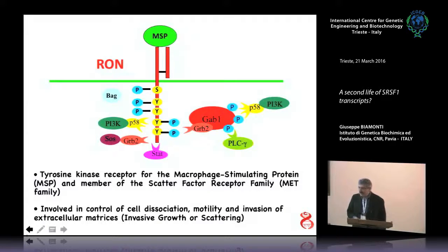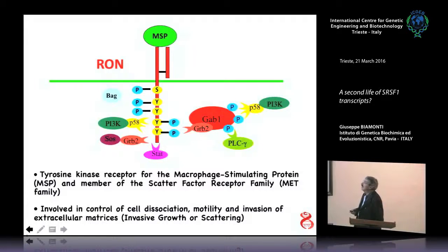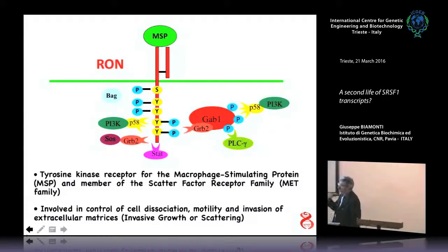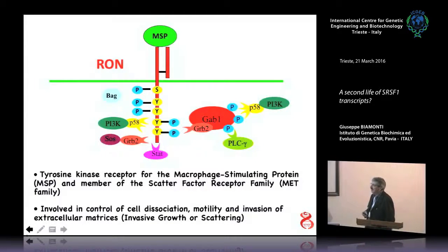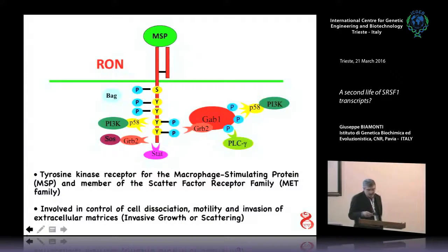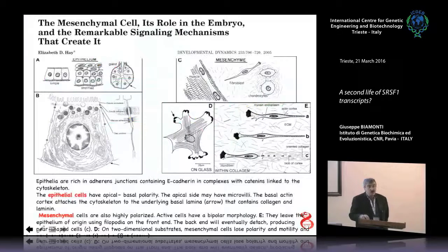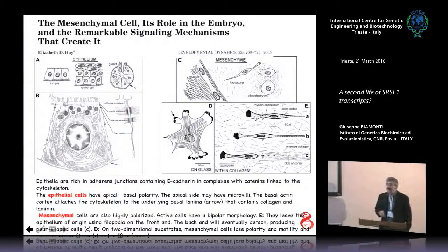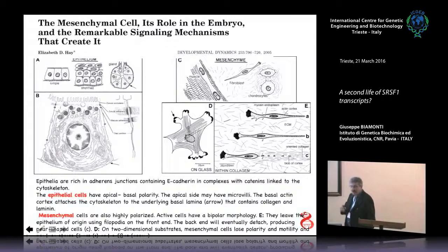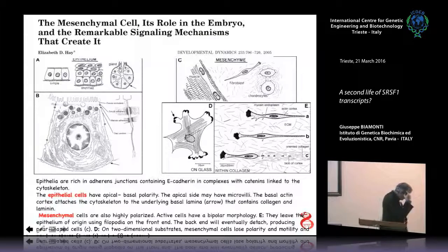When RON interacts with the macrophage stimulating protein, you have activation of the tyrosine kinase, activation of a number of signaling cascades, and the final outcome is invasive growth or cell scattering. This is a mechanism called epithelial to mesenchymal transition, or EMT, which is very important during cancer development.